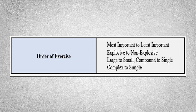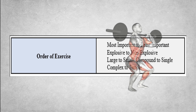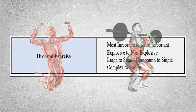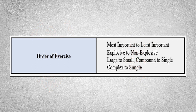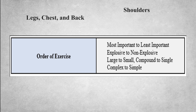Under the topic of order of exercise, generally speaking, you want to place your most important exercises early in the session and move from most important to least important. If your sessions include explosive exercises like Olympic lifts — cleans and snatches — or plyometric exercises such as hops, bounds, and jumps, you want to place them early in the session when you're not fatigued, then move from explosive to non-explosive. You also want to go from large to small, compound movement to single joint movement, and complex to simple. In a total body session this typically means performing legs, chest, and back first, then moving to smaller muscle groups like shoulders, single joint leg exercises such as knee extensions, curls, and calf raises.